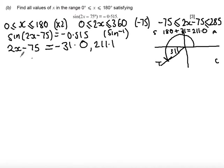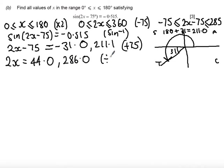All that remains now is to solve the algebraic equation. We do this by first adding 75 degrees to each solution, so 2x = 44.0 degrees and 286.0 degrees. Then dividing by 2 gives us x = 22.0 and 143.0 degrees to one decimal place.